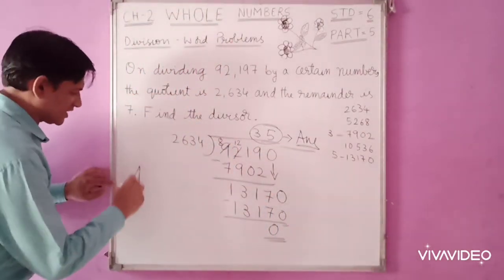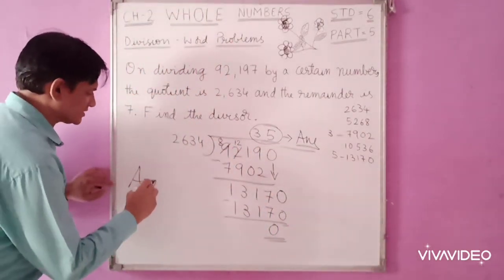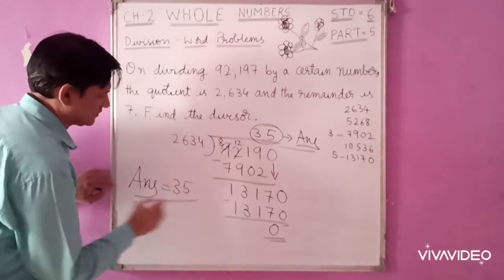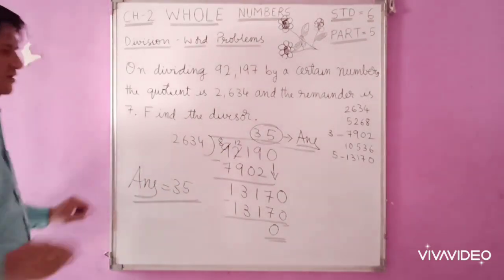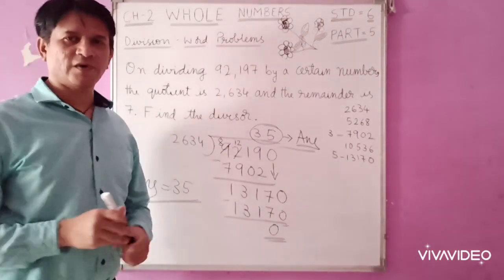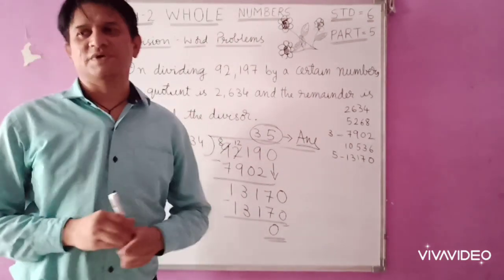So we get the answer as 35. 35 is the required divisor.